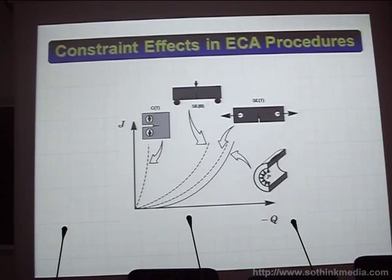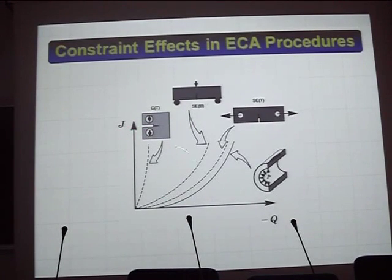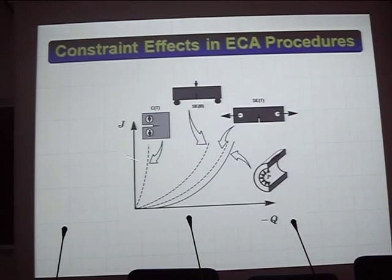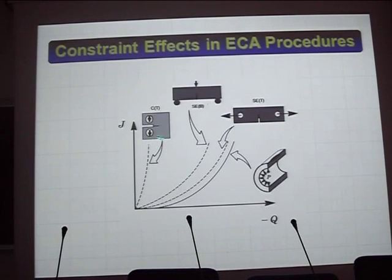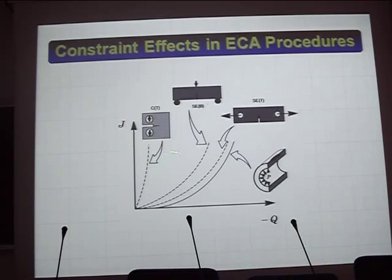First, I'd like to talk about what we call a constraint factor in ECEA procedures. This is the schematic of the JQ curve. Q is the second parameter in JQ methodology to measure the level of corrective constraint. The larger the negative Q, the lower the constraint. The pipeline here has an axial flaw and a very low constraint condition, as indicated by J versus minus Q. On the other hand, in common ECEA procedures, we commonly use either the compact tensile specimen or the deep notch SEB specimen. There is a very large difference in constraint level between a CT specimen and a pipeline, indicating a very conservative assessment when using the CT.